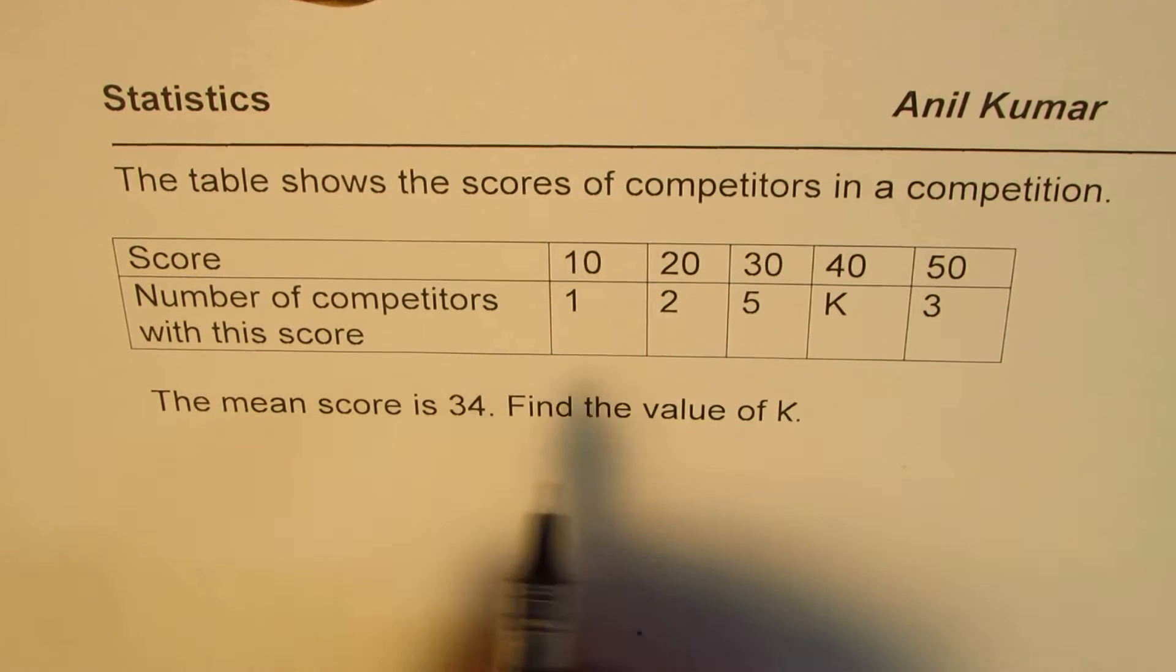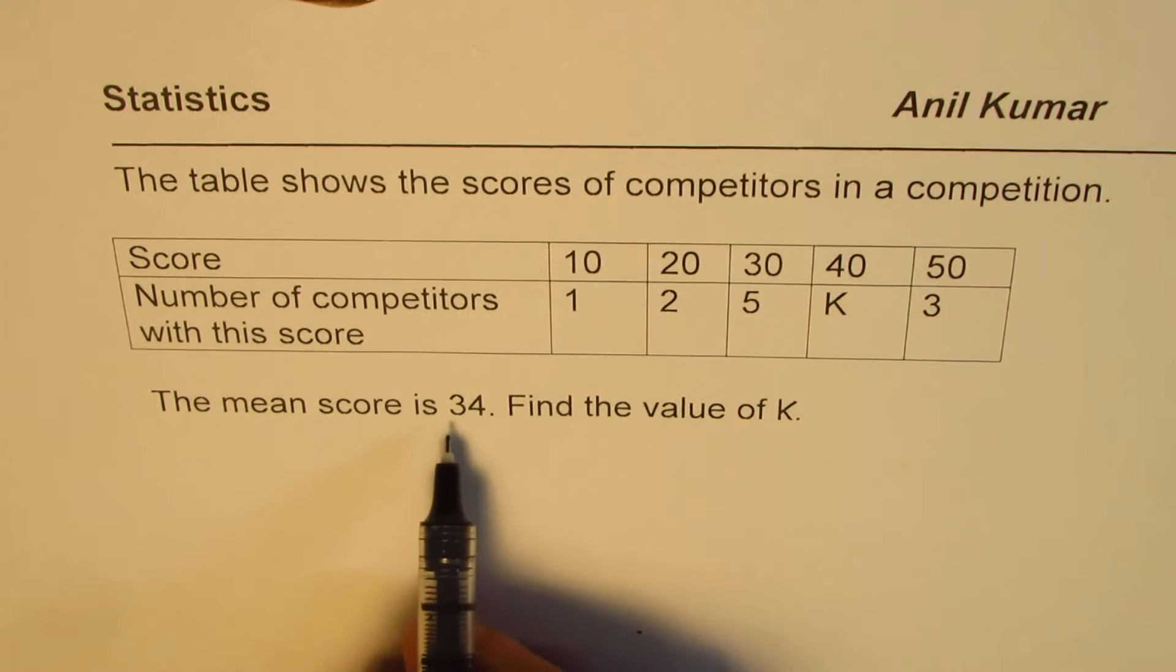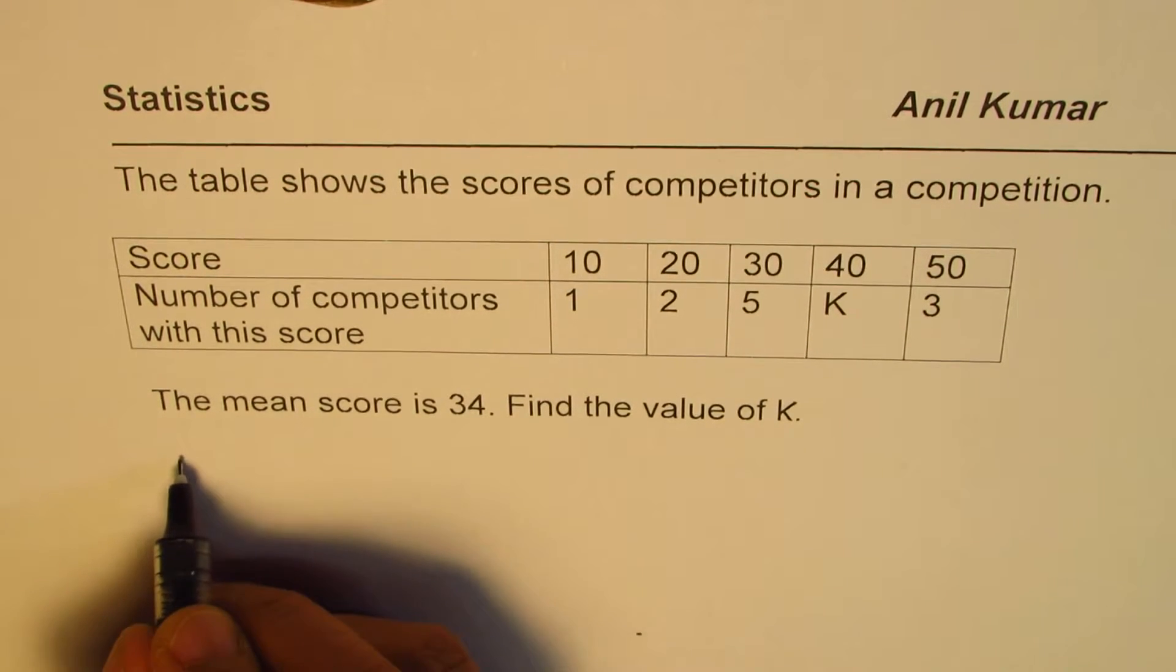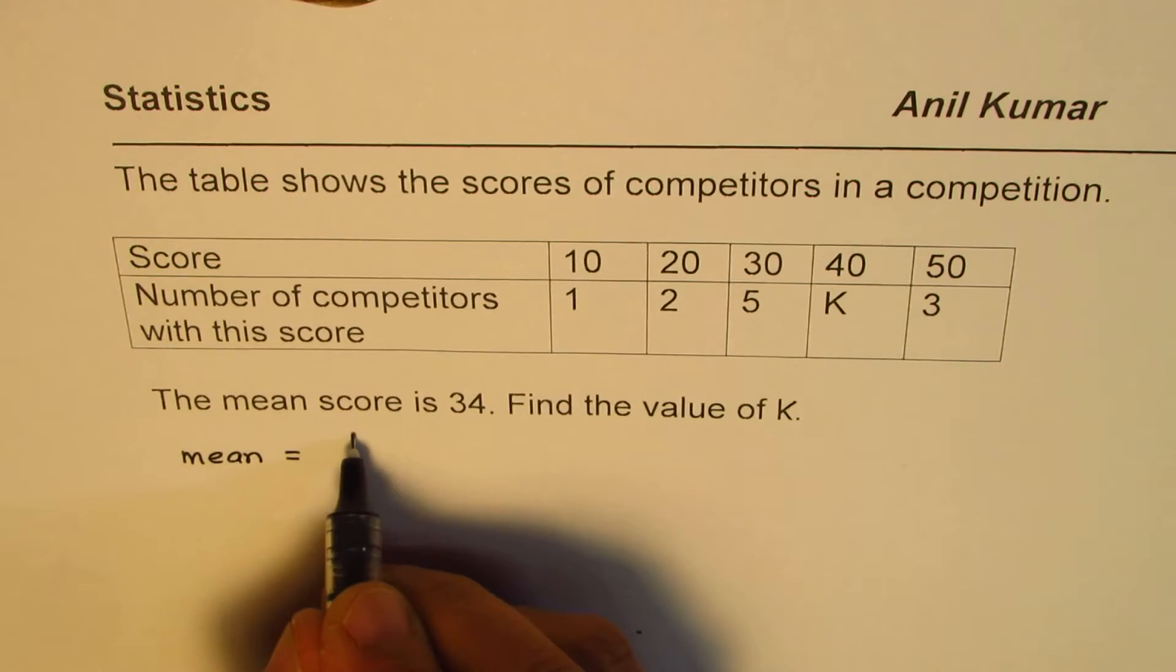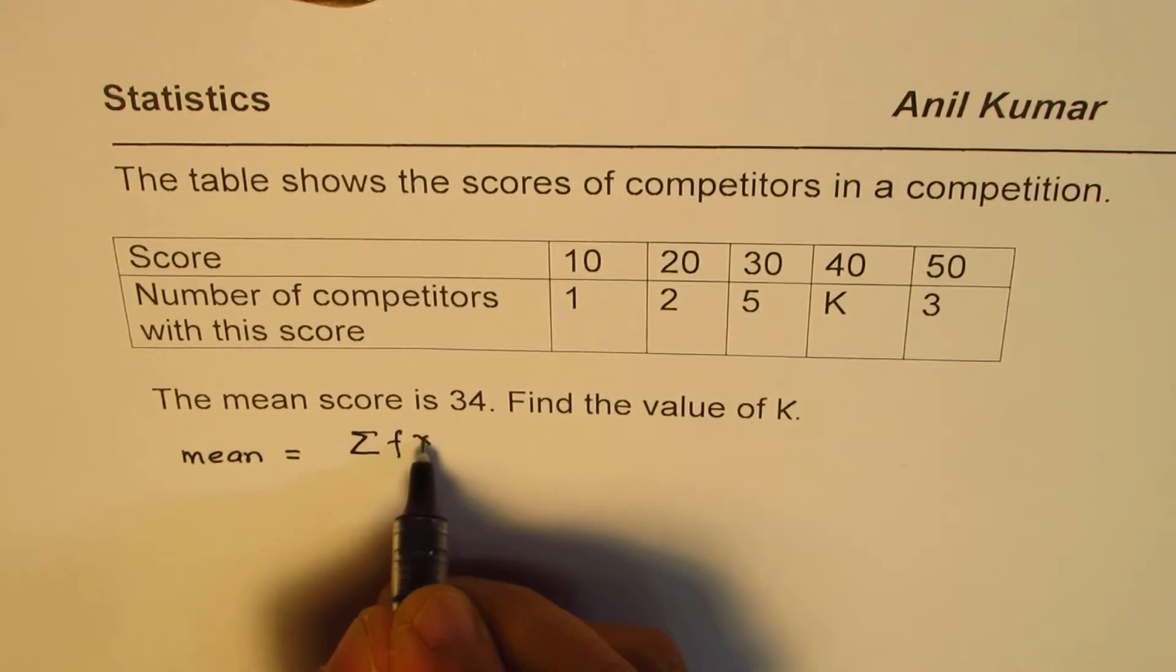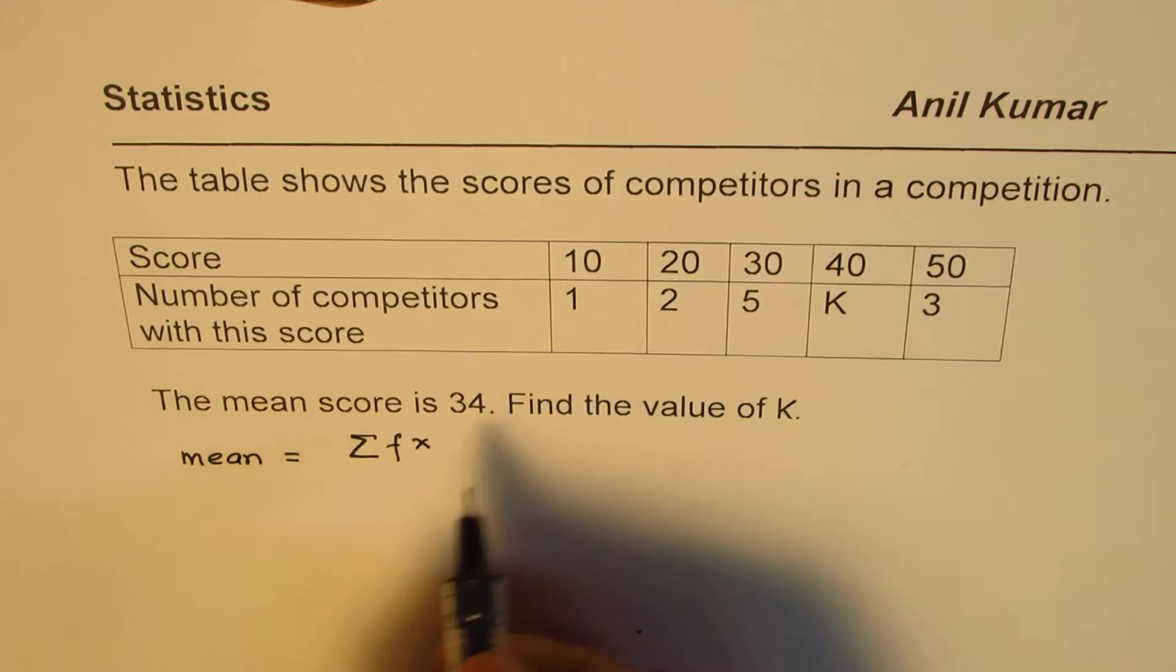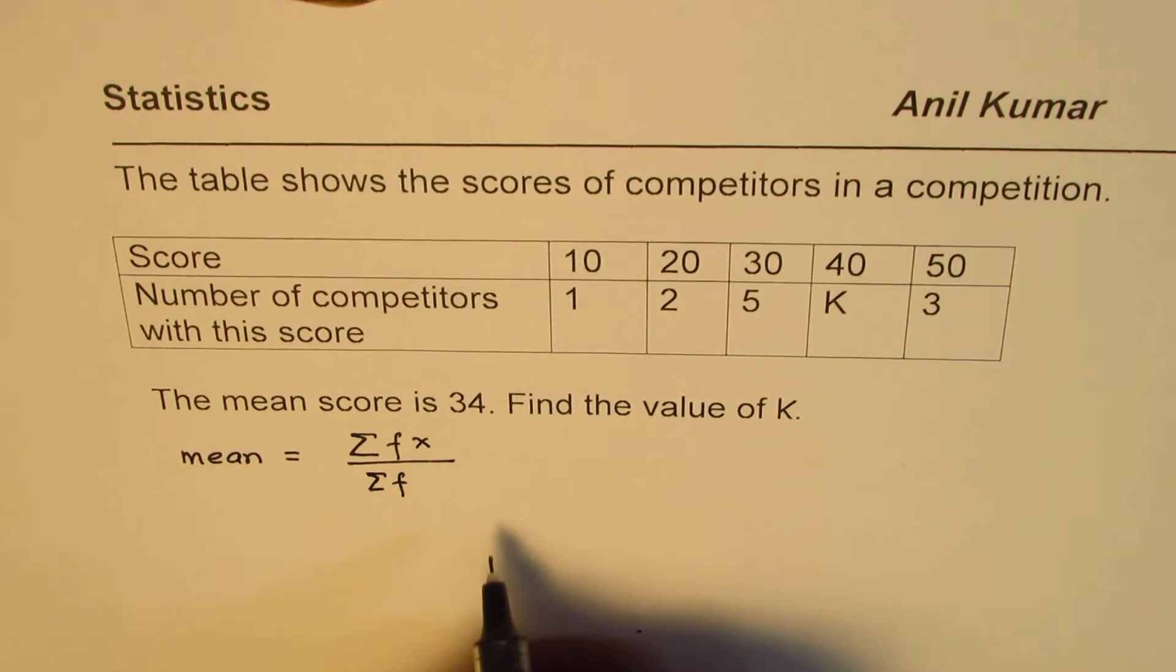Now in this particular case since the mean score is given to us which is 34 and we know mean is equal to the sum of frequency with the number of items fx divided by the sum of frequencies. That is how the mean is related.